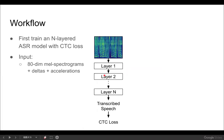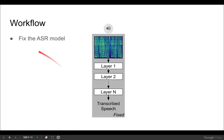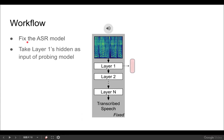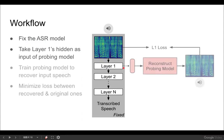We now introduce our workflow of audifying ASR hidden states. We first train an N-layer ASR model with CTC loss. The input is 80-dimensional mel spectrograms, with deltas and accelerations stacked along the channel dimension. Then we fix the ASR model, take some layers' hidden states — for example, layer 1's hidden states — as the input of a probing model, and train the probing model to recover the input speech. The objective is to minimize the loss between recovered spectrograms and original spectrograms.